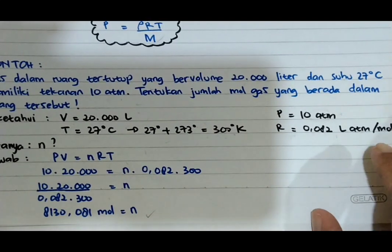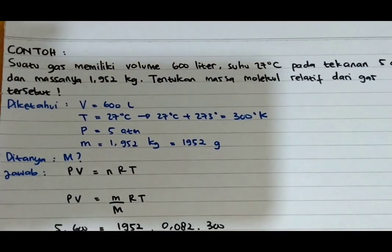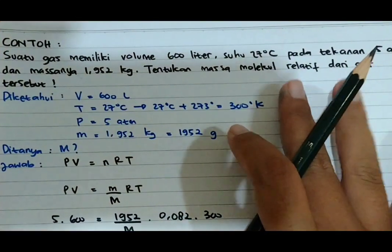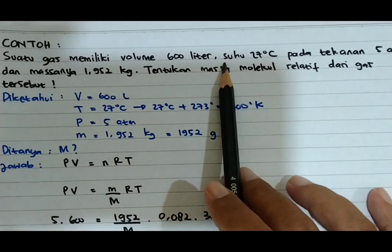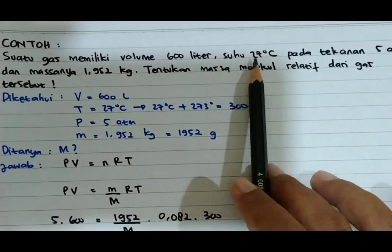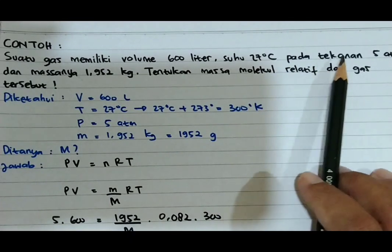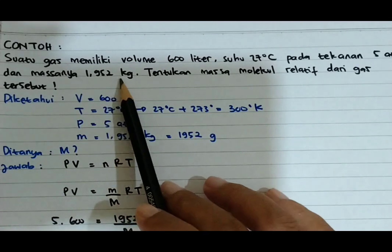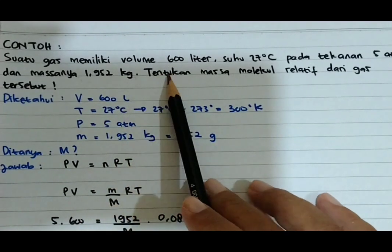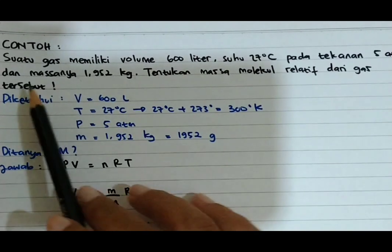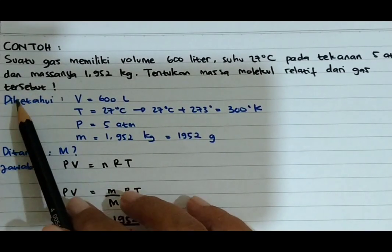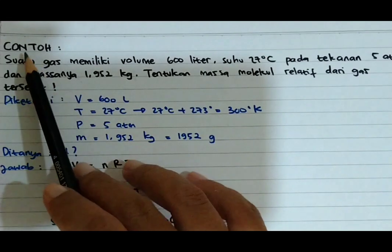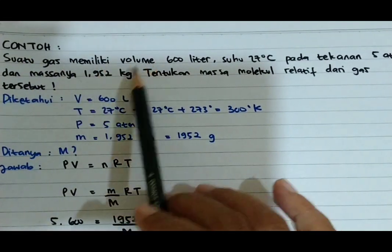Kemudian untuk lebih jelasnya lagi, kita bisa ke contoh soal yang berikutnya. Contoh soal kedua: suatu gas memiliki volume 600 liter, suhu 27 derajat Celsius, pada tekanan 5 atmosfer, dan masanya 1,952 kilogram. Tentukan massa molekul relatif dari gas tersebut.